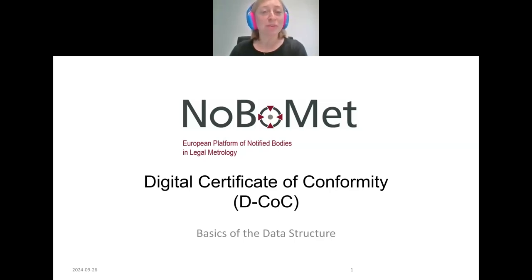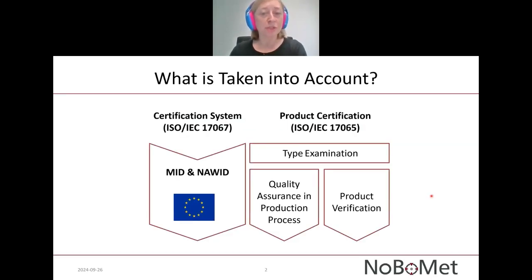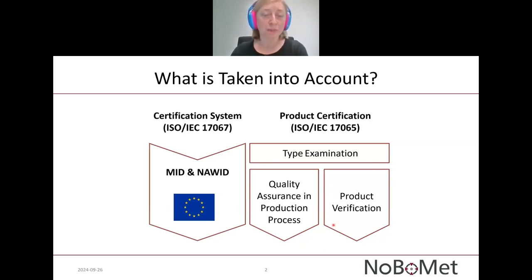In my presentation, I would like to provide you some basics about the data structure related to the Digital Certificate of Conformity, abbreviated as DCOC. The DCOC data structure shall cover specific types of certificates of conformity which are issued for legally regulated measuring instruments. These instruments have been certified within type examination, either in combination with quality assurance and production process, or within product verification — carried out under the European Directive for measuring instruments and for non-automatic weighing instruments.